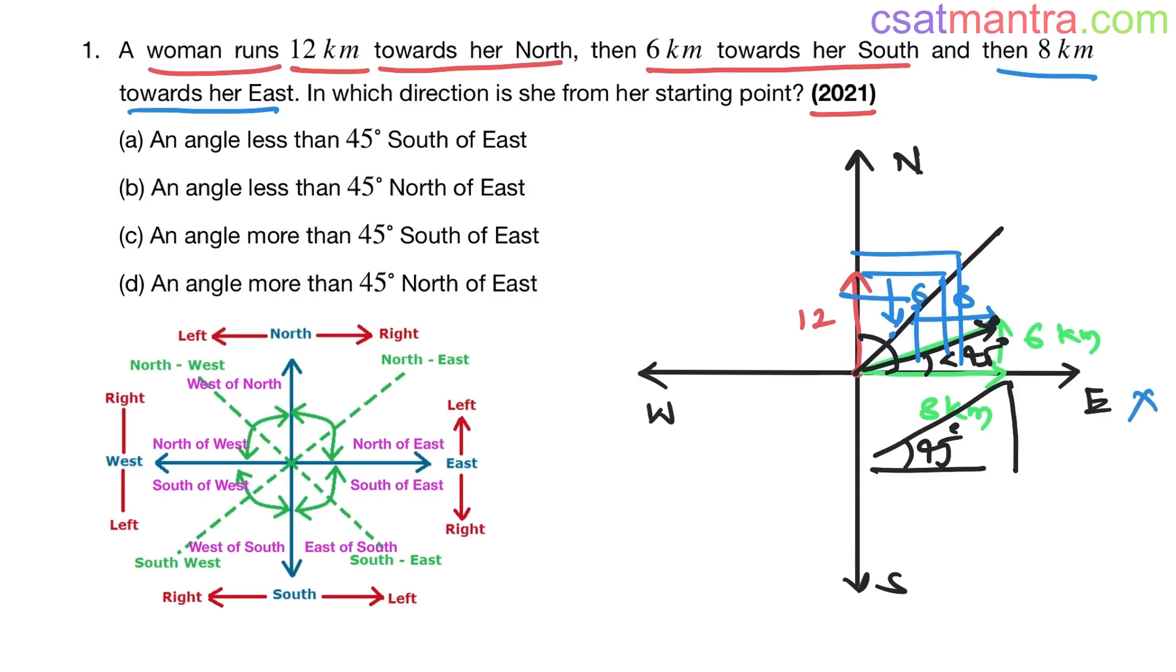If this is less than 8, that is 6 kilometers, then it's less than 45 degrees. As simple as this - see, this point is below this line, my friends. This line makes 45 degrees with the axis.